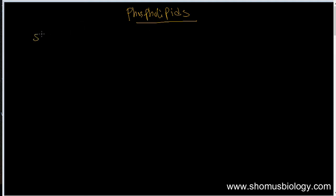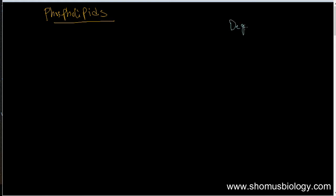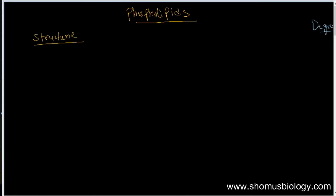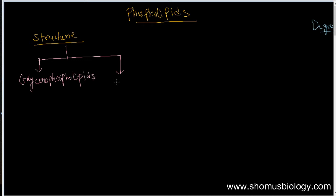First of all, phospholipids. We'll talk about the phospholipid structure and also the degradation of phospholipids. The phospholipid can be classified into two different types: one is glycerophospholipids, and another one is sphingomyelin. Two types.